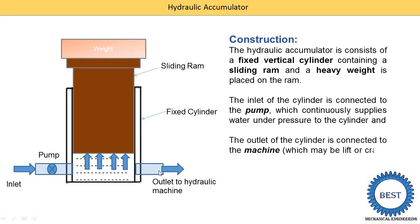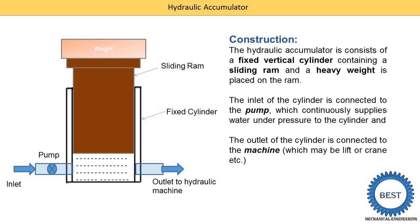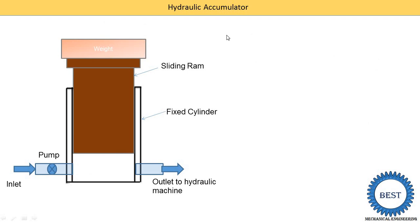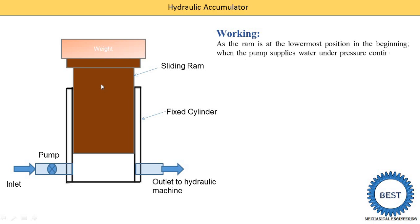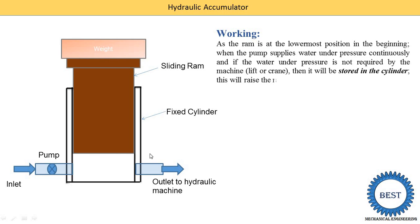The outlet of the cylinder is connected with various machines which may be a lift, crane, or hydraulic press. Now we move towards the working with complete animation. At the beginning, when we start the hydraulic accumulator, the ram is at its lowermost position. Then the pump starts and water is supplied from the pump.